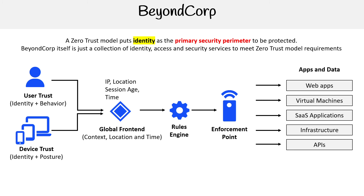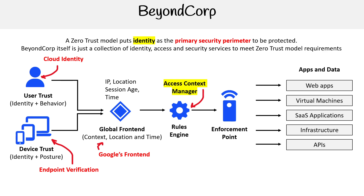This is the rough outline of where BeyondCorp fits. We incorporate specific services: Cloud Identity for endpoint verification, the Google front end (which is Google's network, not a separate service), Access Context Manager, and for enforcement points we have Cloud IAP, Cloud IAM, Cloud Identity, and VPC Service Controls. The three highlighted in yellow — to me, that's really what BeyondCorp is — but broadly, BeyondCorp is the collection of all these services working together in this model.